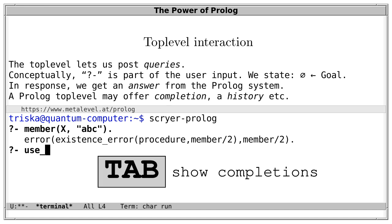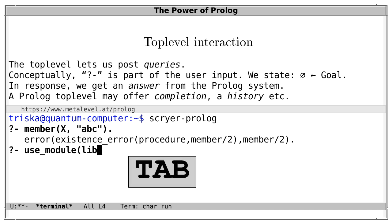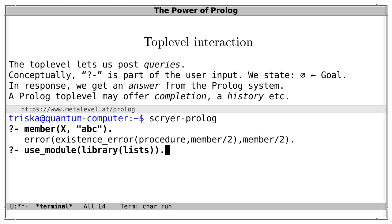In Scryer Prolog, if we press tab, then we can cycle through sensible completions. For example, pressing tab expands to use_module, and by pressing tab again we can cycle through completions. We can complete this through library. We do this because member is defined in the lists library, so we load the library. As answer, we get true — procedurally speaking, this succeeds.